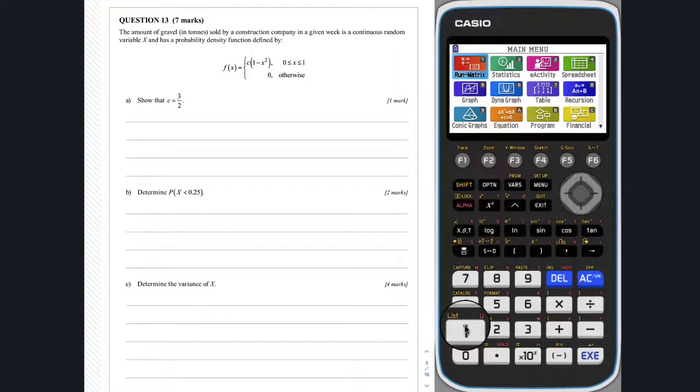Question 13, part A. I can spy two key pieces of information to help us tackle this question. We are told that x is a continuous random variable and it has a probability density function. To be a valid PDF, the integral of f of x from x equals 0 to x equals 1 must be 1. Using this last condition, we can work out c.